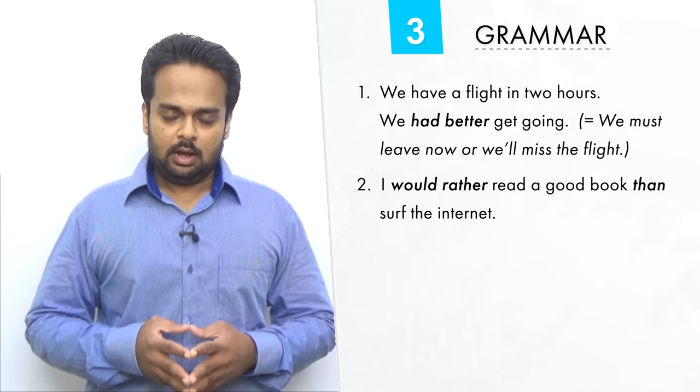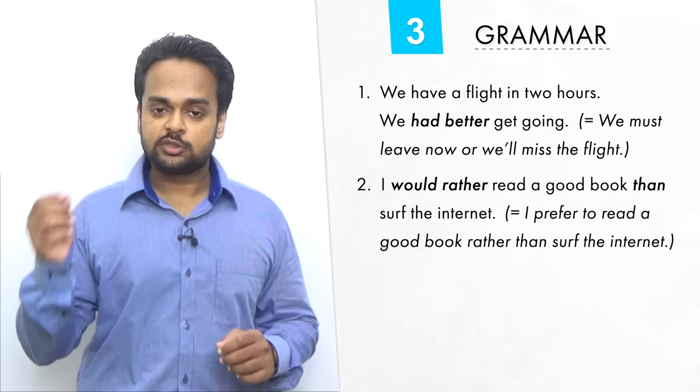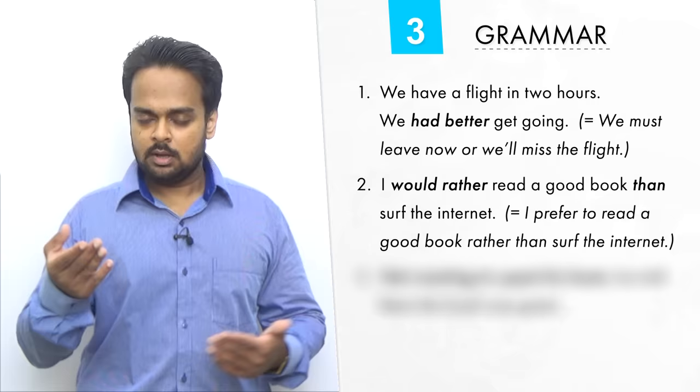Here's another one. I'd rather read a good book than surf the internet. What does it mean? Well, it shows my preference. Given two options – to read a good book or to surf, that is, browse the internet, I would choose the first option – I prefer to read a good book. This preference is shown by the structure would rather do A than B. It means I prefer A.